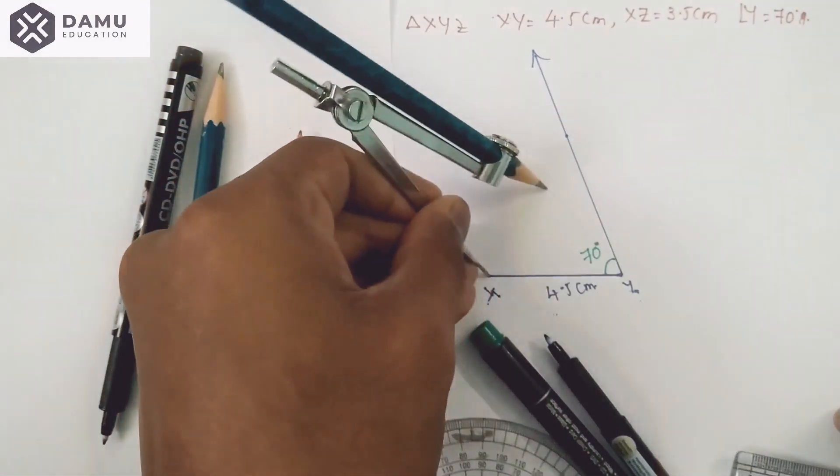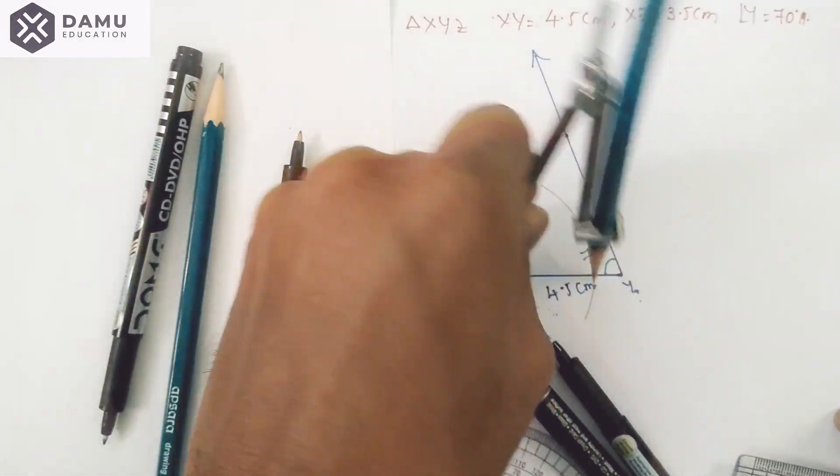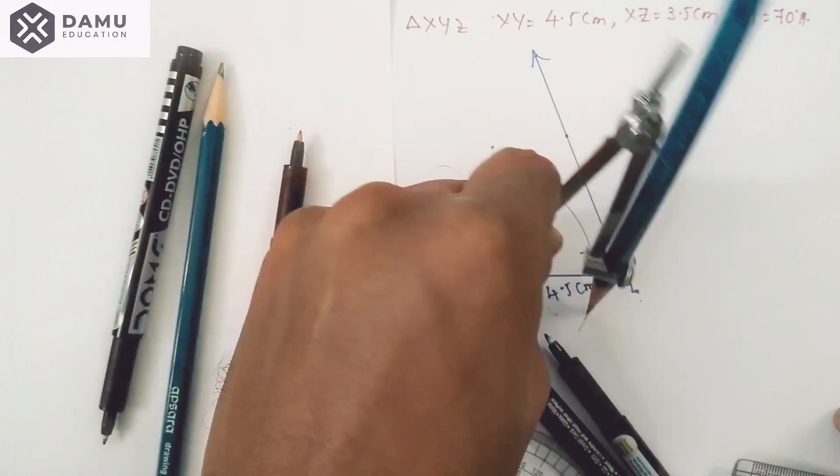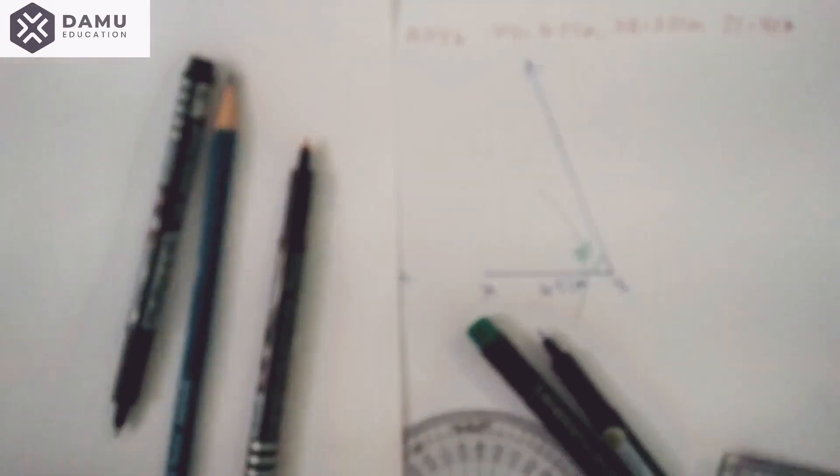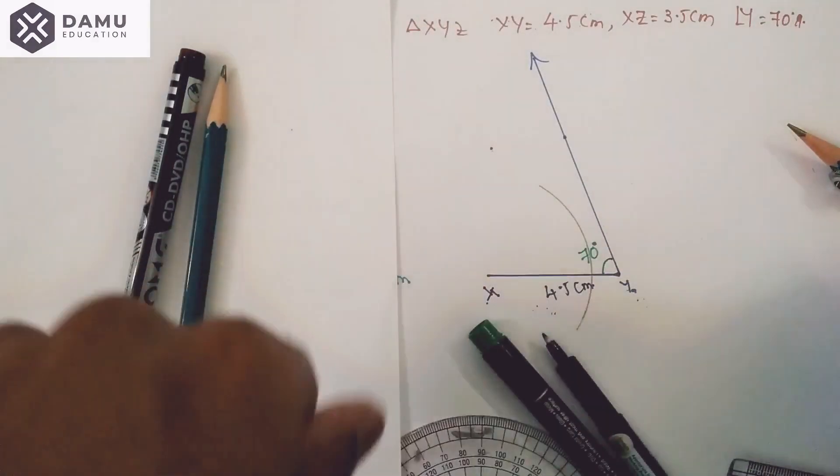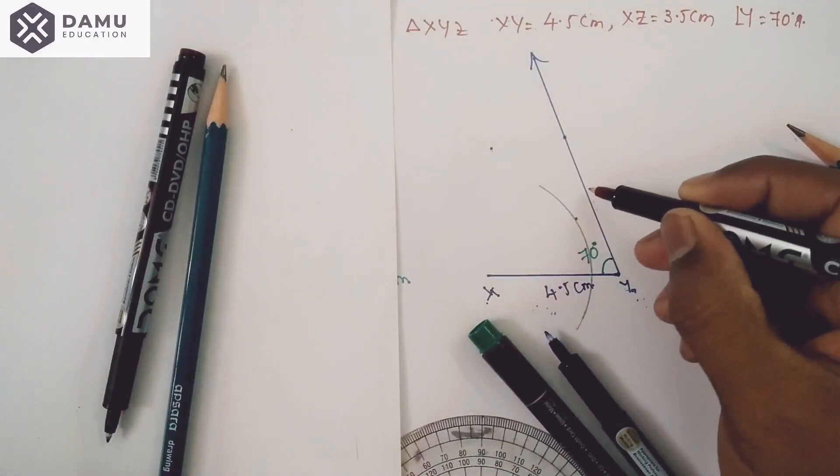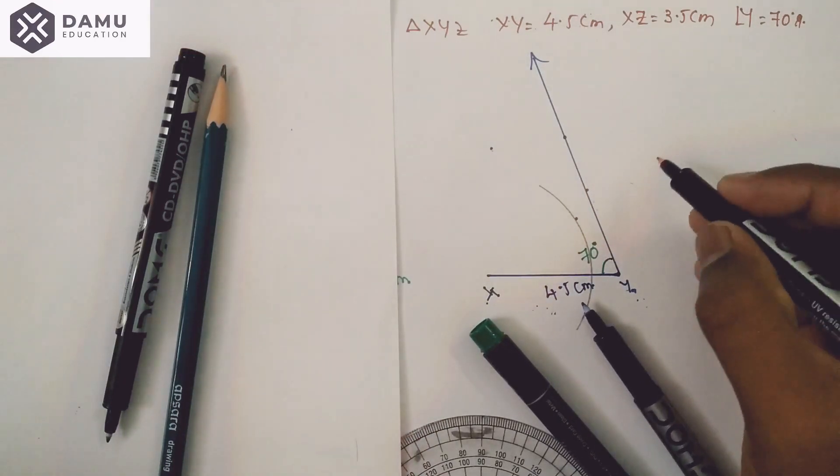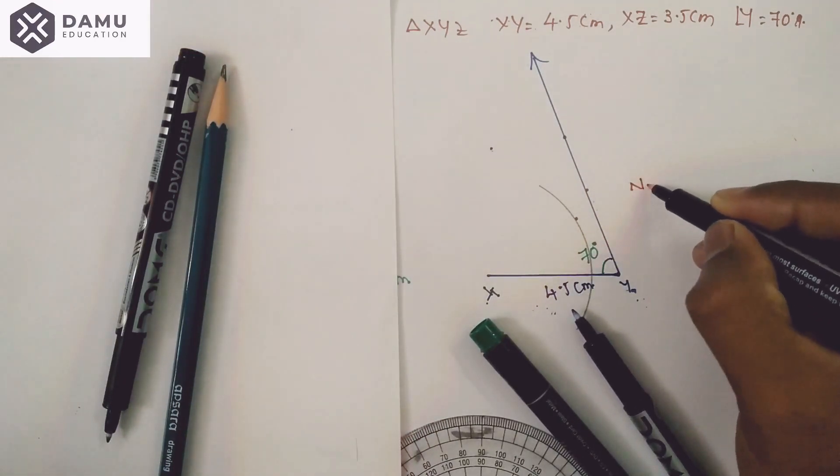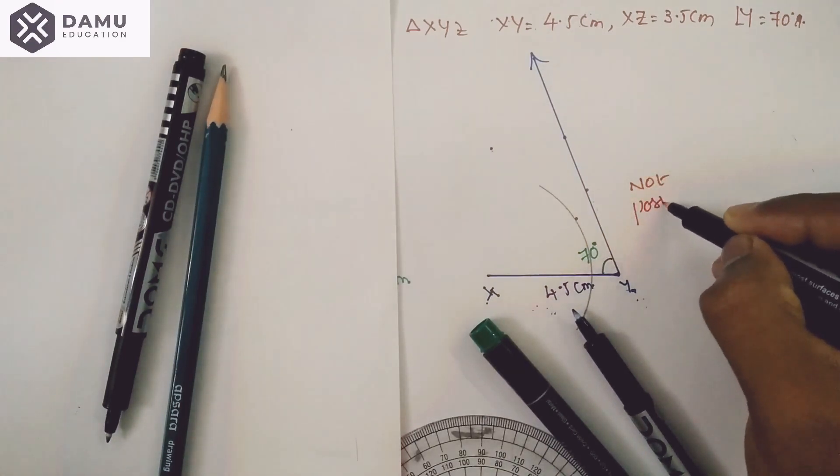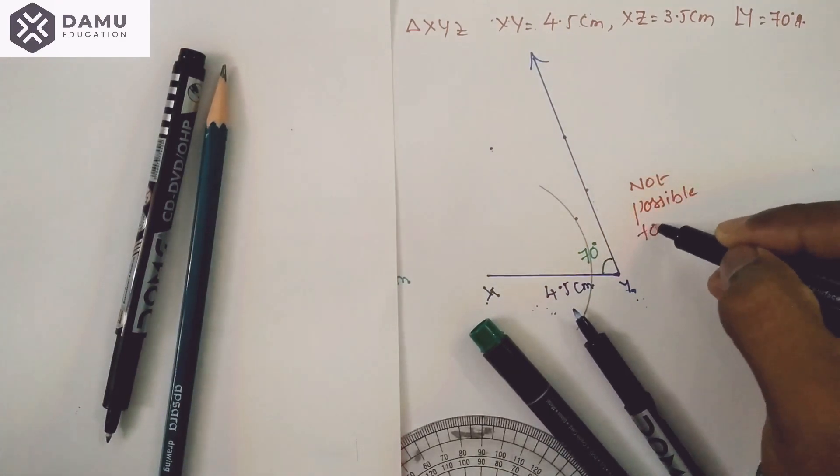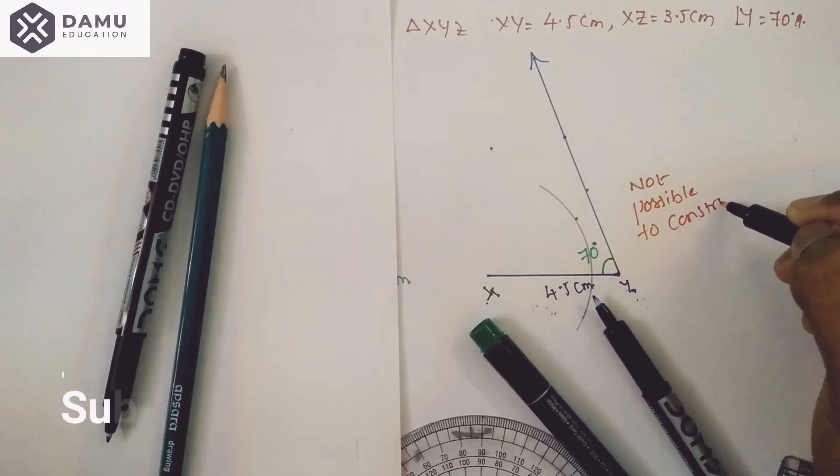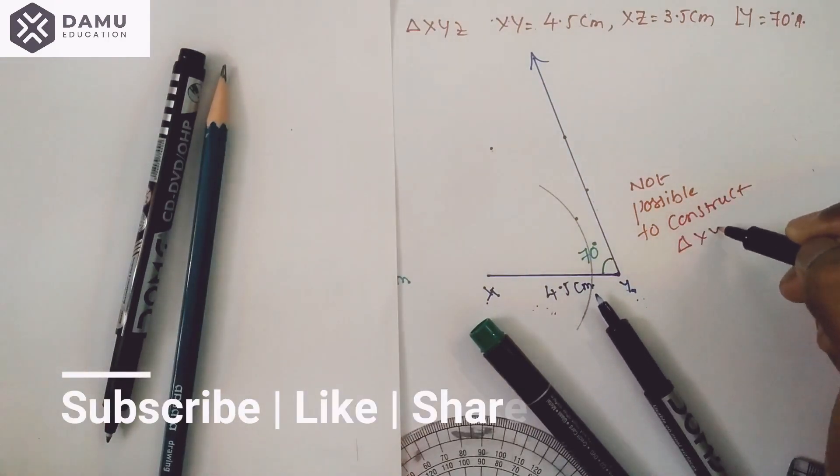With X as center and radius 3.5 centimeters, what is the output? The arc does not coincide with the ray. Since this arc does not coincide, we will not get two triangles, so it's not possible to construct triangle XYZ.